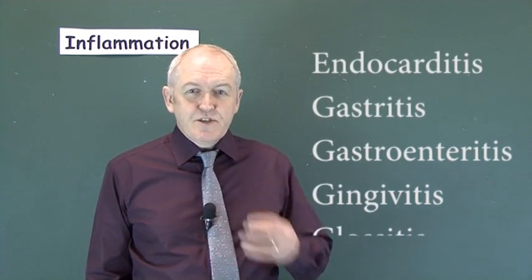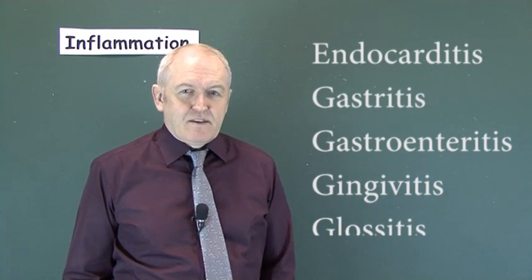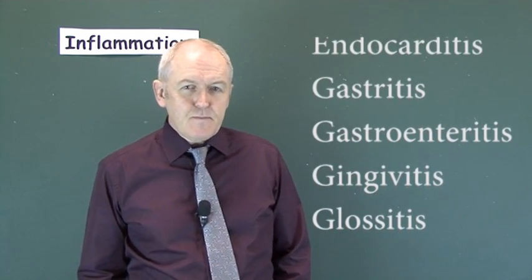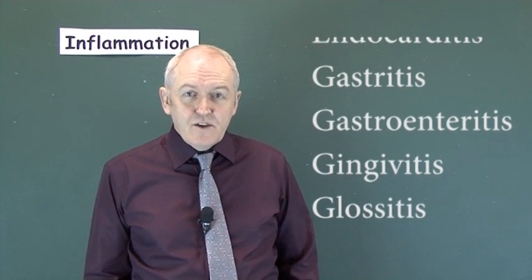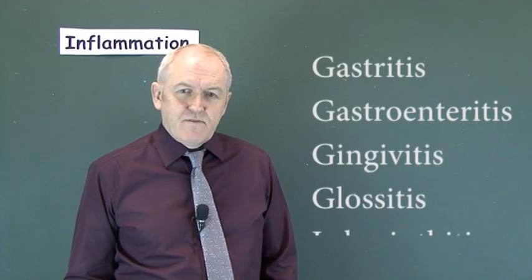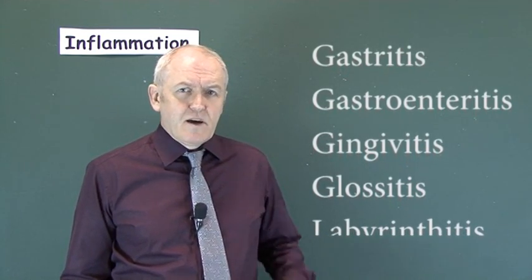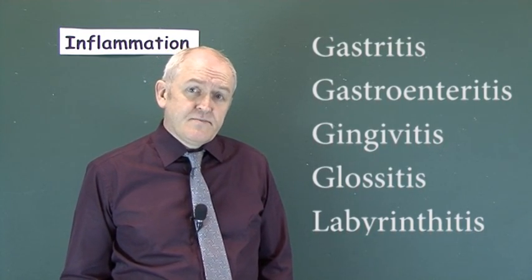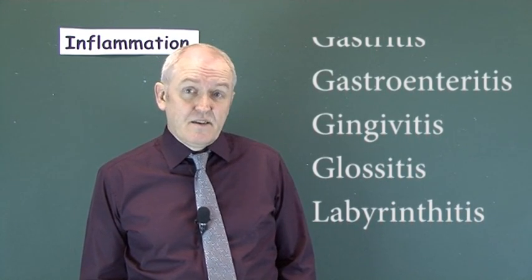Gingivitis is inflammation of the gums, usually caused by a build-up of plaque at the junction between the teeth and gums. Glossitis is inflammation of the tongue itself. It can be allergic, caused by a chemical insult, fungal infection — which is actually quite common in the mouth — producing a big red swollen tongue. Glossitis can also be caused by iron deficiency.